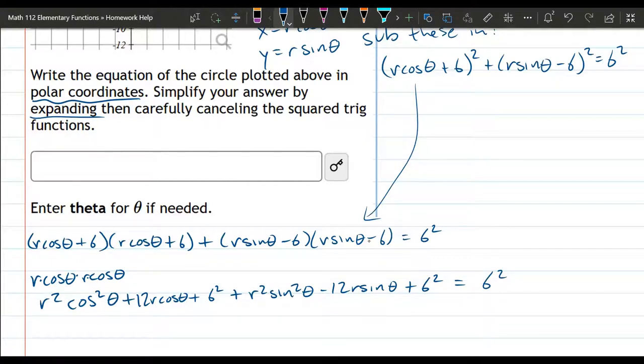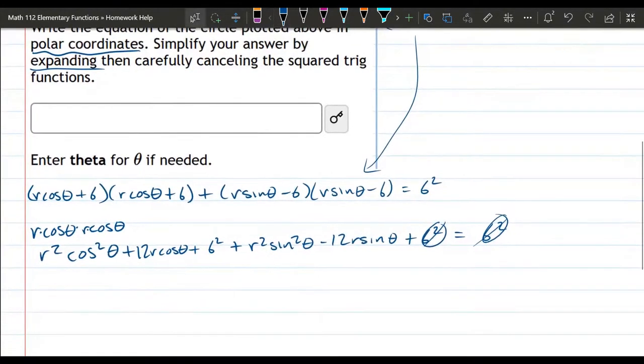And you still have the 6 squared on the other side. So we're going to do a few things here. There's a 6 squared on both sides, so if I subtract 6 squared, these will cancel. There's still a 6 squared that's going to survive. The other thing we're going to do, we have two terms that have an r squared, so we're going to factor out the r squared. And the reason why, you should see an identity right there. So the two terms with an r squared I factored out, so it's left is cos squared plus sine squared.